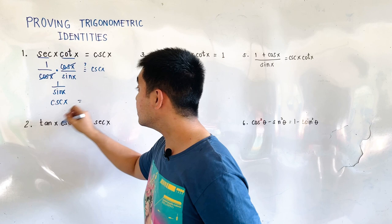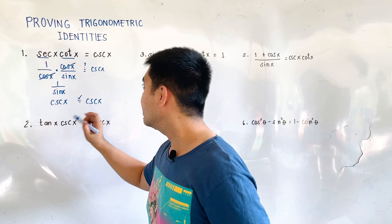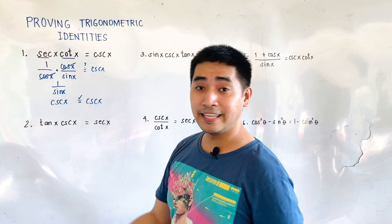Is the left side equal to the right side now? Yes. Therefore, we are given an identity, and we were able to prove that problem number 1 is really an identity.